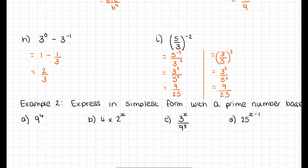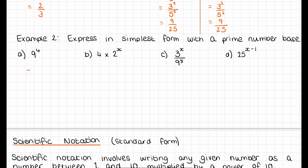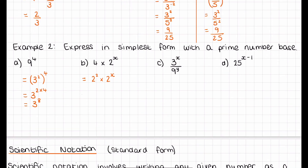Now, expressing in simplest form with a prime number base. Example A: 9 to the power of 4 — 9 isn't a prime number, so we rewrite 9 as 3 squared. Then we have 3 squared to the power of 4, and using the law we multiply: 2 times 4 gives us 3 to the power of 8. Example B: 4 is not a prime number, so we rewrite it as 2 squared, giving 2 squared times 2 to the power of x. Since 2 is prime, we add the powers: 2 to the power of 2 plus x. Make sure you don't write 2x — it's 2 plus x; they're two different things.